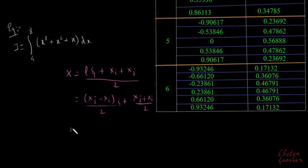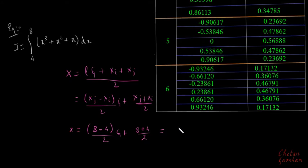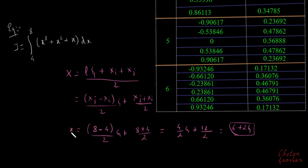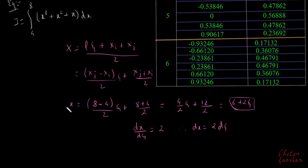Let us find x in terms of ξ. Here x_j is 8 and x_i is 4, so x = ((8−4)/2)ξ + (8+4)/2 = (4/2)ξ + 12/2, which gives x = 6 + 2ξ. Also, dx/dξ = 2, therefore dx = 2 dξ. Substituting: in place of x we put 6 + 2ξ, and in place of dx we put 2 dξ, and the limits change from minus one to plus one.